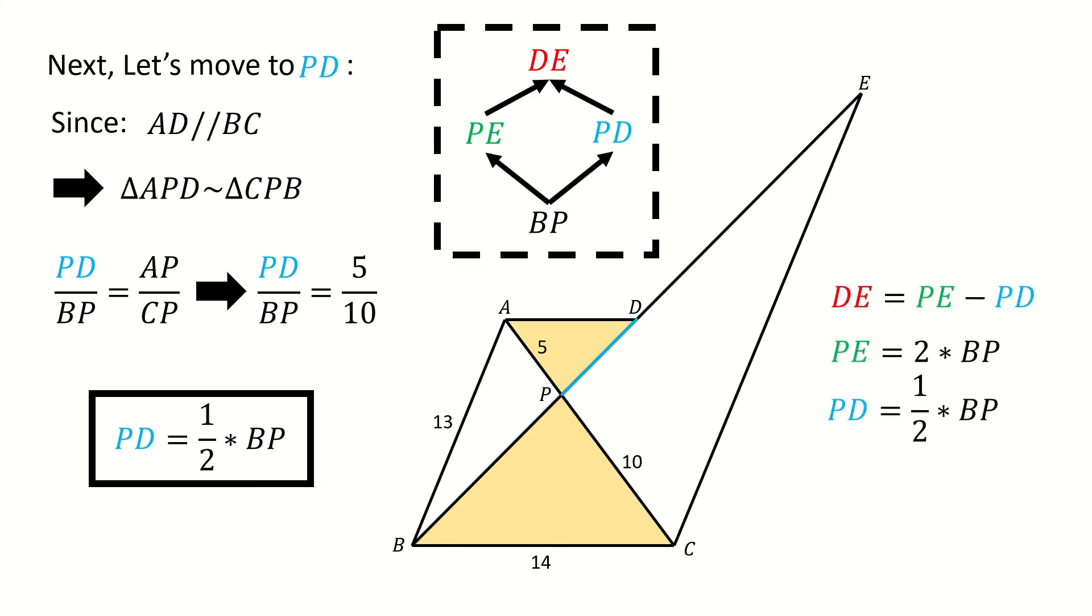We summarize the relation here: DE equals PE minus PD, and PE equals twice BP, and PD equals half BP. So we get DE equals three-halves times BP. As long as we get BP, we can immediately know DE.